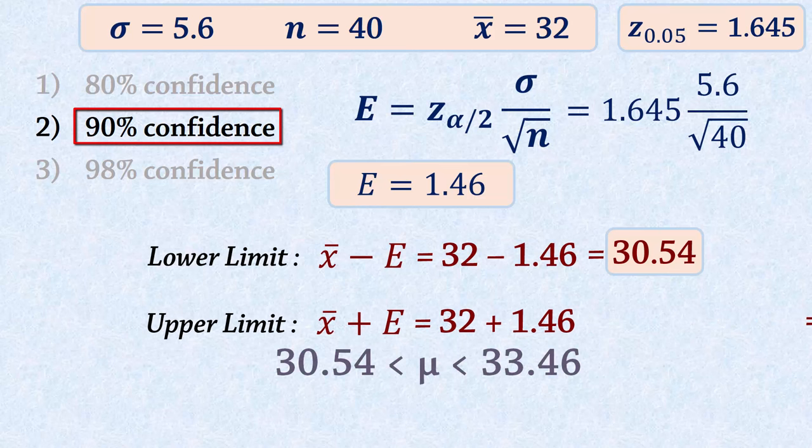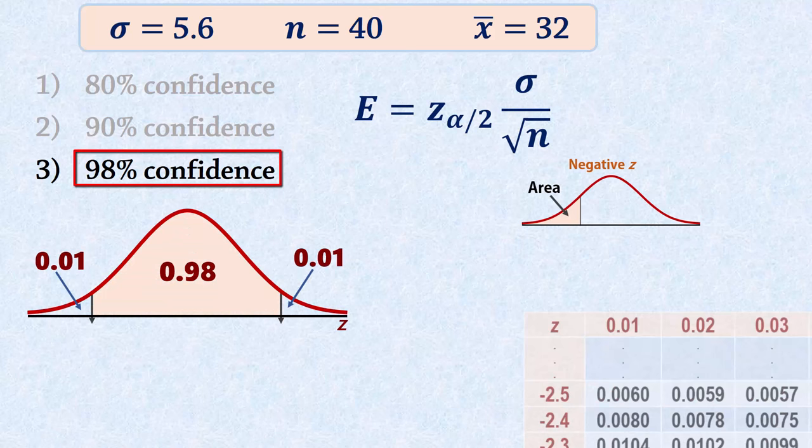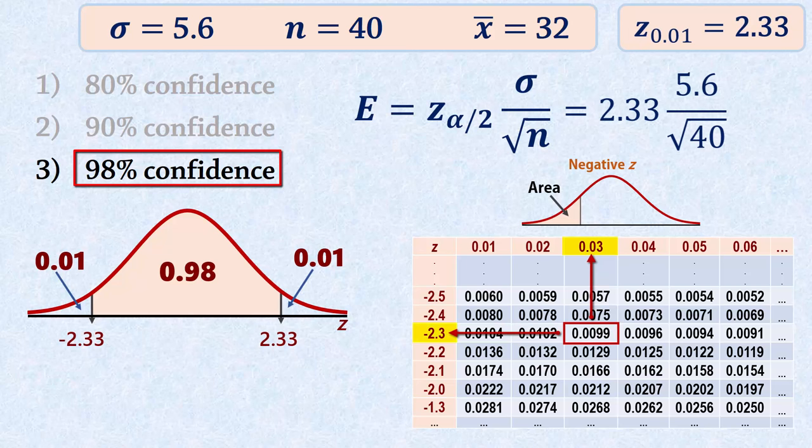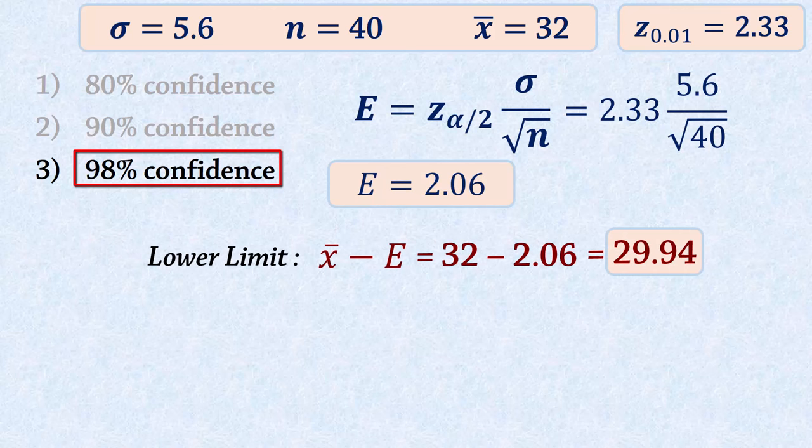The 98% confidence interval has 0.01 in each tail and has a Z critical value of 2.33. So the margin of error will be 2.06. The lower limit will be 29.94, and the upper limit 34.06.